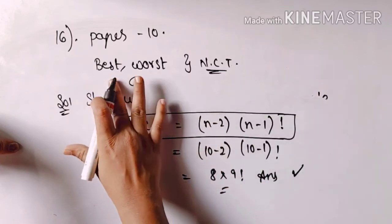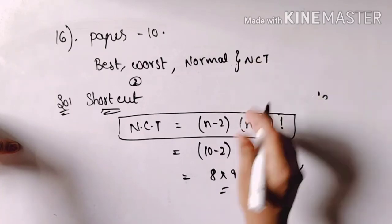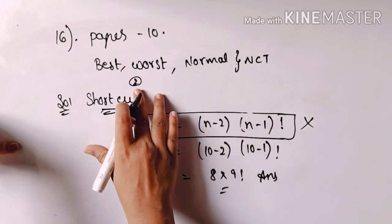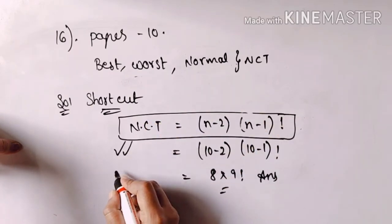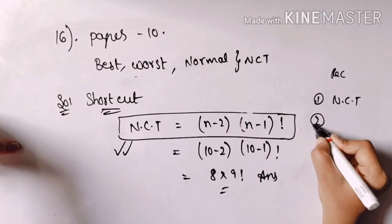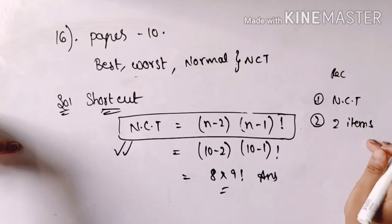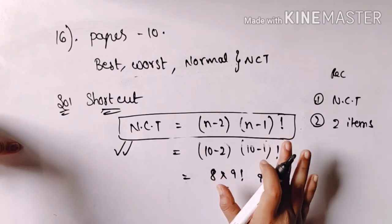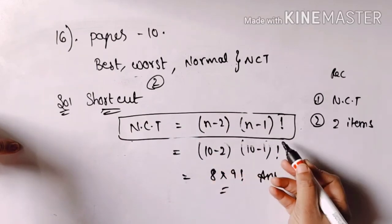If you understand — suppose you have just normal papers. Then 'never come together' applies, and you use n minus 2 into n minus 1 factorial. This restriction is for 2 items only. But if there is a third item, this restriction still always applies to the 'never come together' question. The second restriction is that it must be exactly 2 items. So for 'never come together' with 2 items — best and worst — we answer simply n minus 2 into n minus 1 factorial.